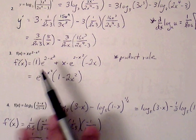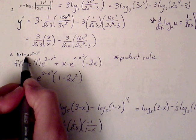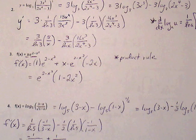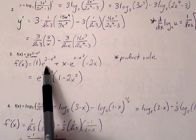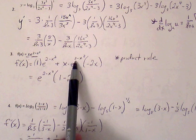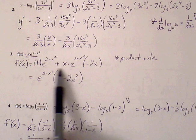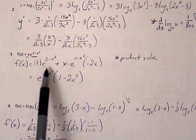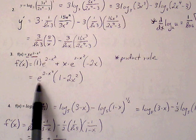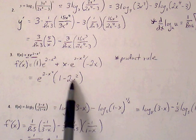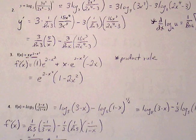For number 3, we have f of x equals x times e to the 2 minus x squared. Since we have two terms being multiplied together, we have to use the product rule: f prime g plus f times g prime. The derivative of e to the u is e to the u times u prime. After applying product rule, we can factor out e to the 2 minus x squared, leaving 1 minus 2x squared inside the bracket.